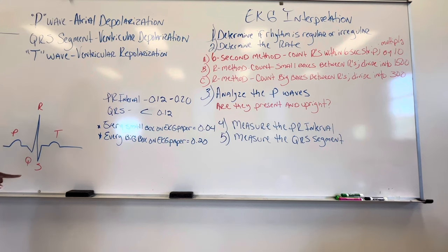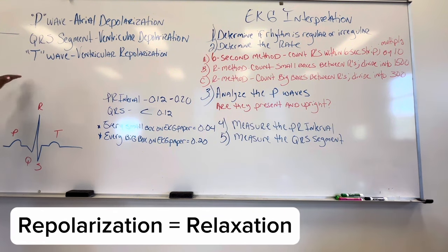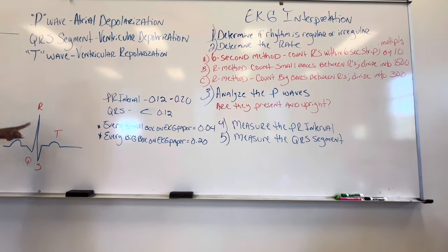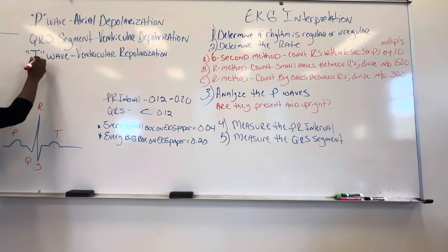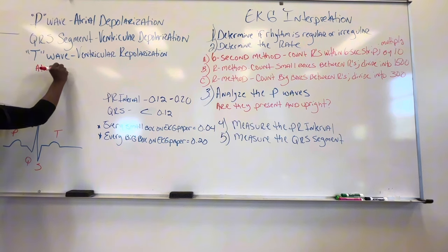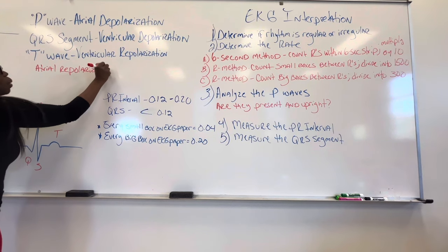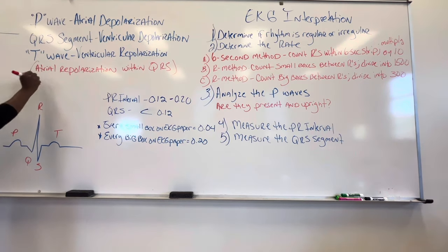Now after every depolarization, which is contraction, follows repolarization. So notice we have the ventricular depolarization followed by the ventricular repolarization. But where is the atrial repolarization? That's going to be actually found within the QRS segment. So we can't see that, but I'm going to make a note here that the atrial repolarization, or atrial relaxation, is going to be found within the QRS.